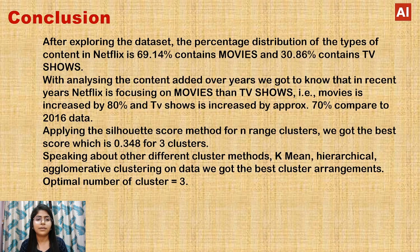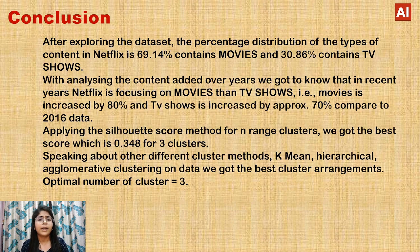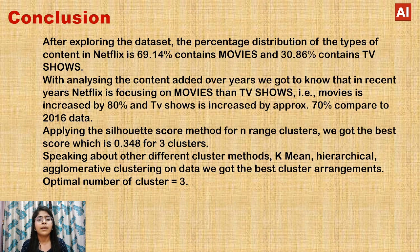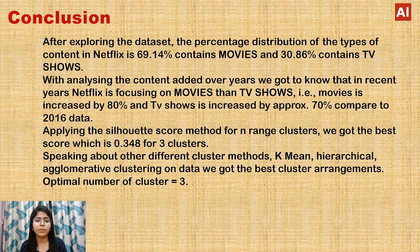To conclude: after exploring the dataset, 69.14% of Netflix content is movies and 30.86% is TV shows. Analyzing content added over the years, Netflix has been focusing more on movies than TV shows in recent years — movies increased by 80% and TV shows by approximately 70% compared to 2016 data. Applying the Silhouette score method, the best score is 0.348 for 3 clusters. Using K-means, hierarchical, and agglomerative clustering methods, we consistently get the optimal number of clusters as 3.